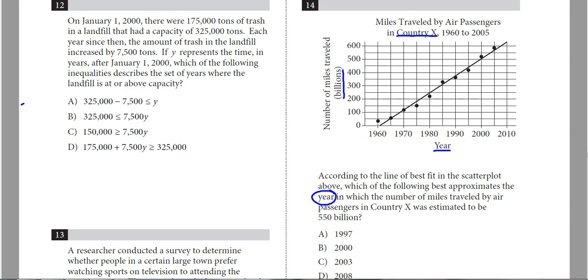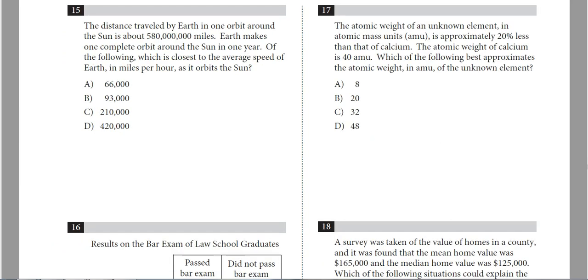So 550 billion is this line right here. And it looks like when you come down and match that up with a year, you've got to kind of be careful. If this line is 2000 and this line is 2010, that means 2005 is right there, and we're a little less than that. So maybe somewhere around 2002, 2003. Looking at my choices, it looks like C, 2003 would be the best approximation for that one.